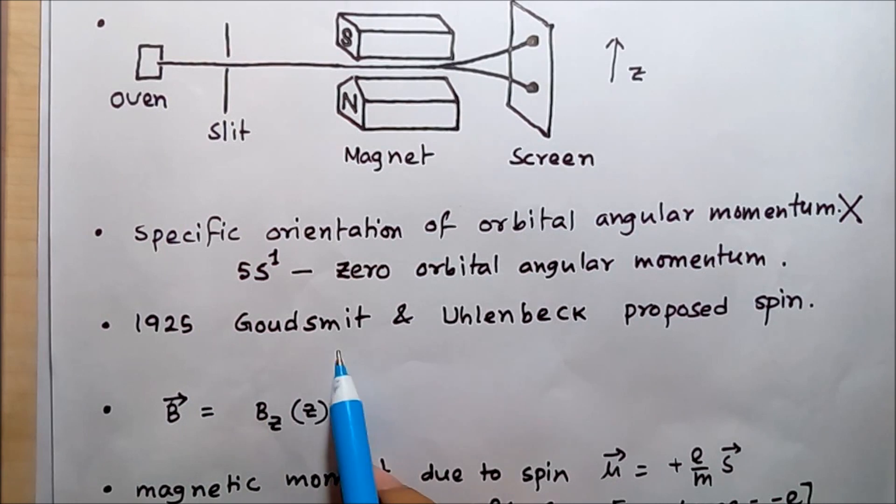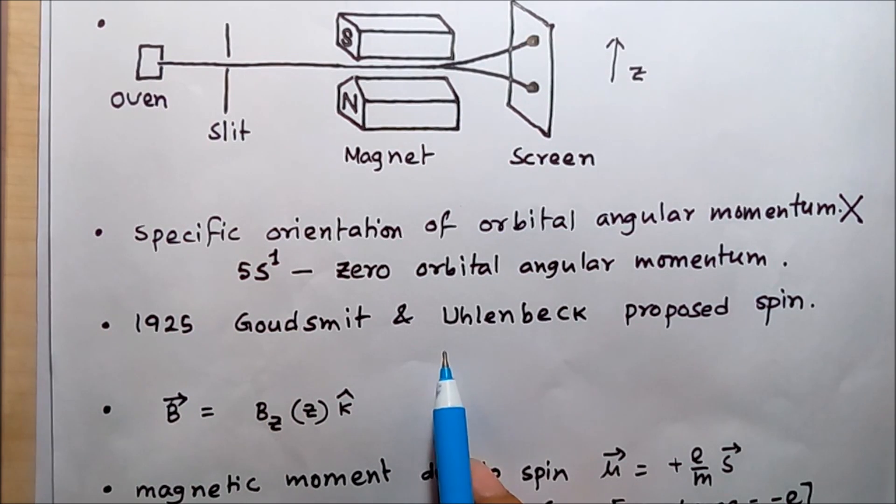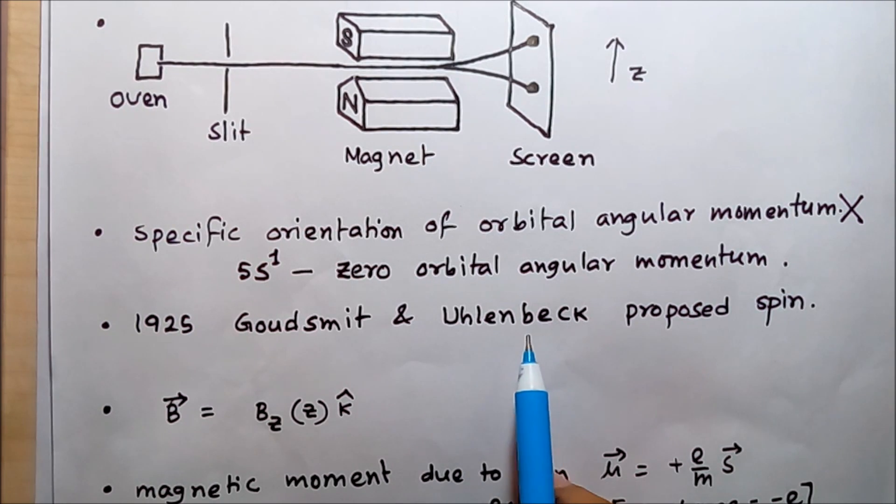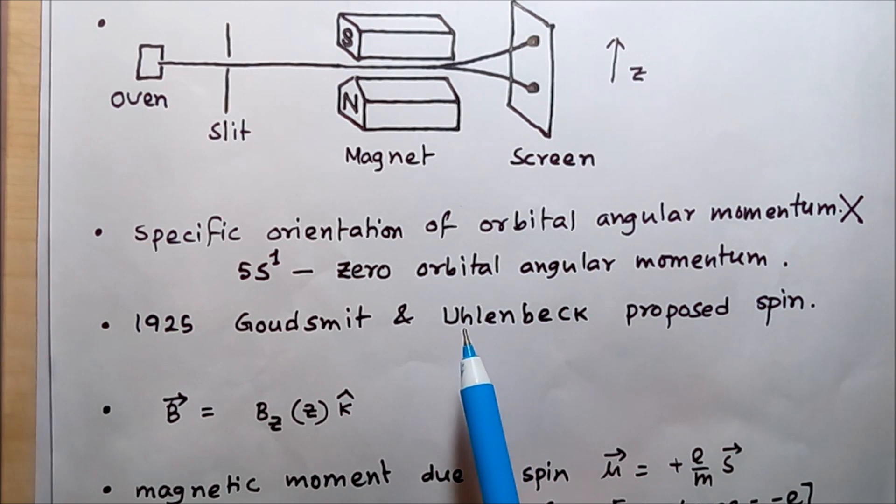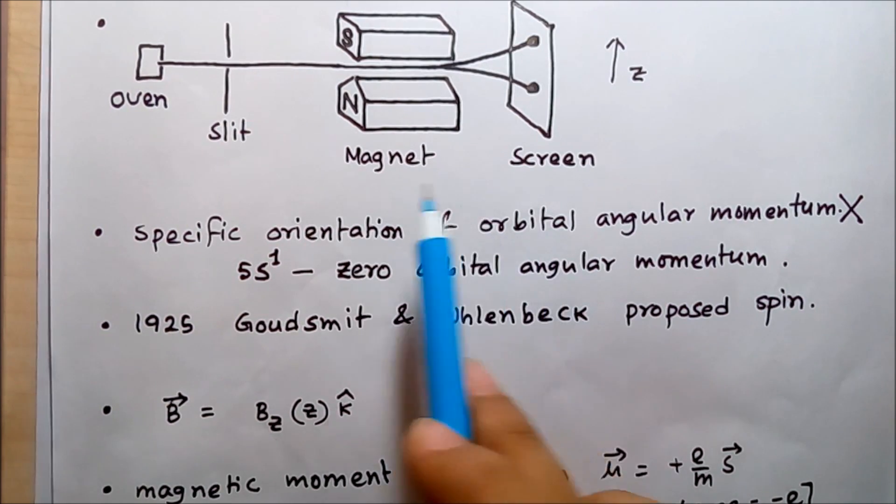In 1925, Goudsmit and Uhlenbeck proposed the idea of spin and tried to describe the result of the Stern-Gerlach experiment. The theory matched the experimental results perfectly. Today we will follow how they proved the existence of spin in the context of Stern and Gerlach's experimental results.